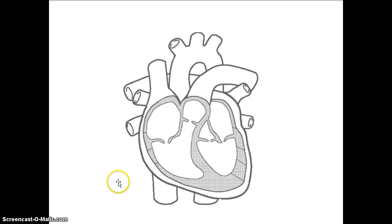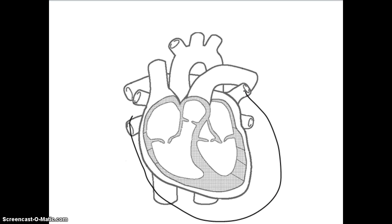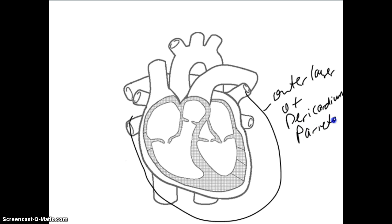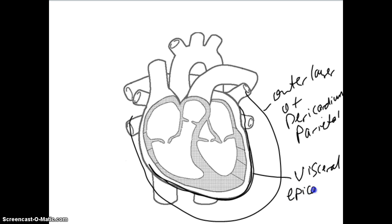Here we have a diagram, and I'm going to draw the sac around the heart. What I've just drawn signifies the outer layer of the pericardium, which is the parietal layer. Then you have the inner layer of the pericardium, which is the visceral layer — and the outermost wall of the heart, the epicardium, is the same thing as the visceral layer.